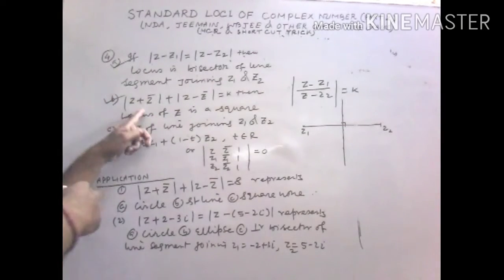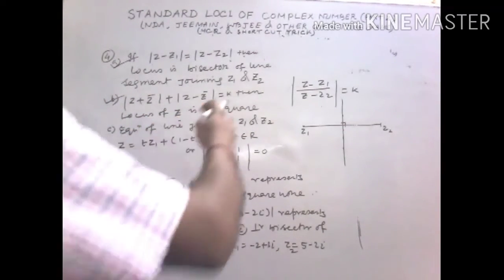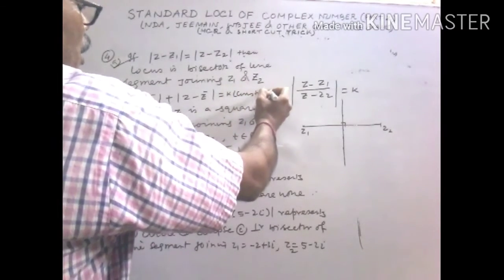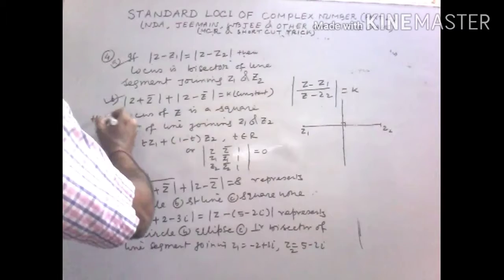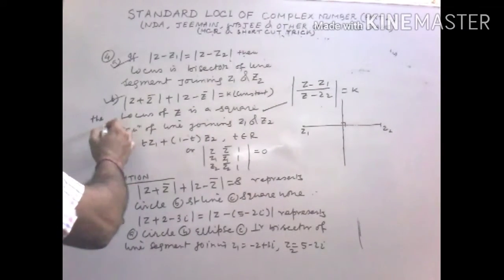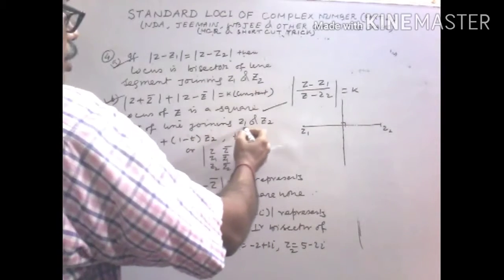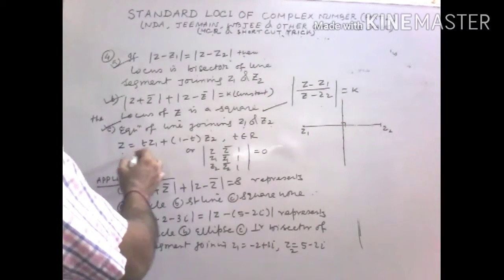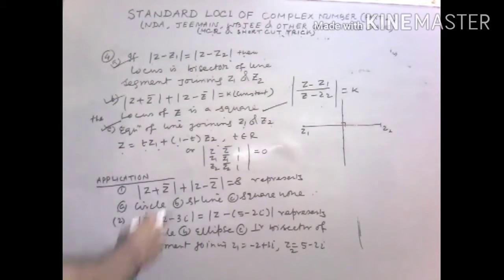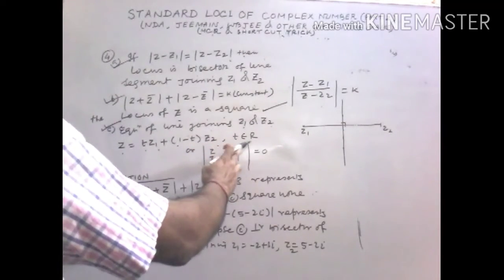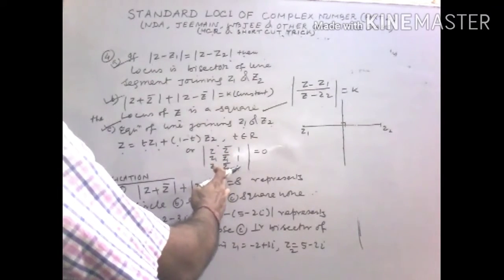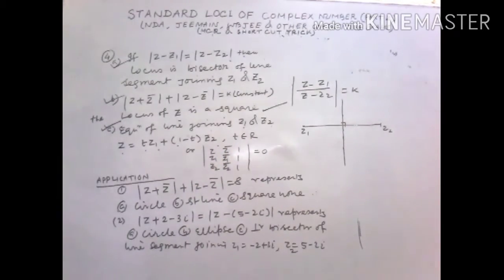Additional results: if |Z + Z̄| + |Z - Z̄| = K (constant), then the locus of Z is a square. The equation of the line joining Z1 and Z2 is given by Z = tZ1 + (1-t)Z2 where t belongs to ℝ, or equivalently the determinant with Z, Z̄, 1; Z1, Z̄1, 1; Z2, Z̄2, 1 equals zero.